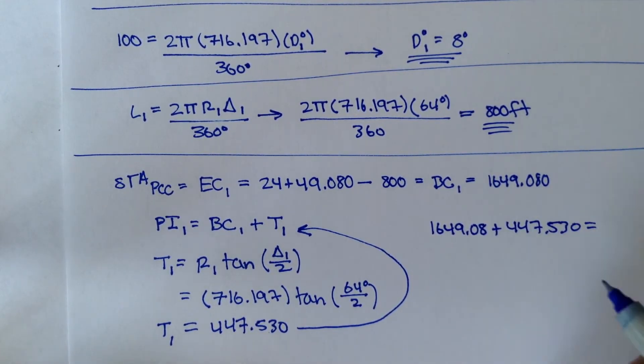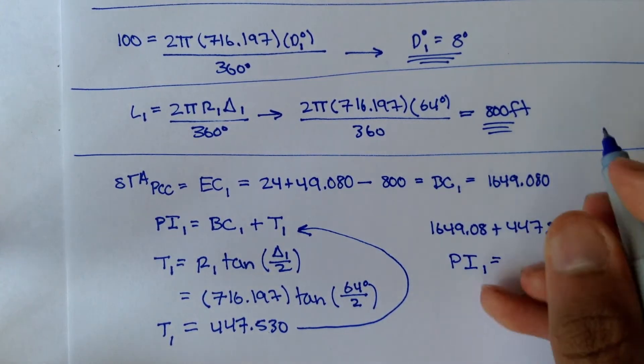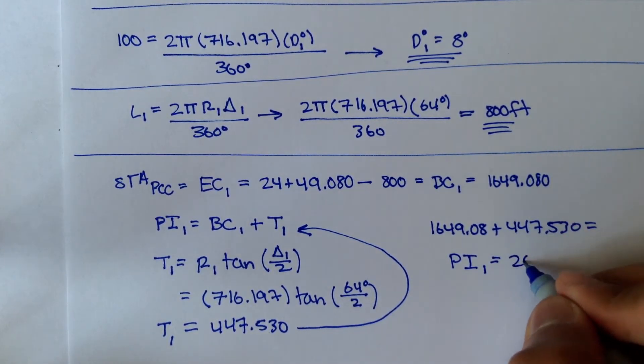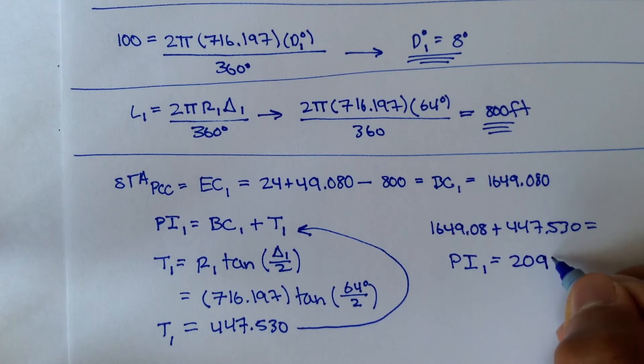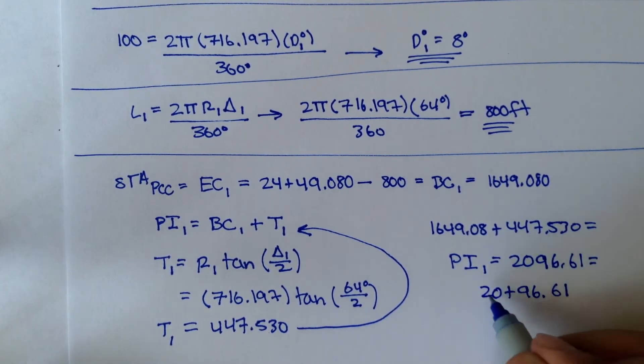BC1 was 1649.08 plus 447.530. So the station, PI1 is equal to 2096.61, or in station form, that's 20 plus 96.61.